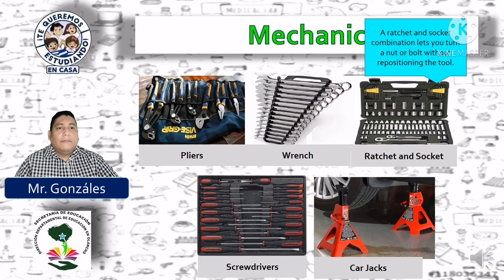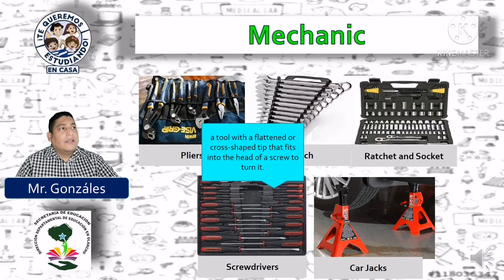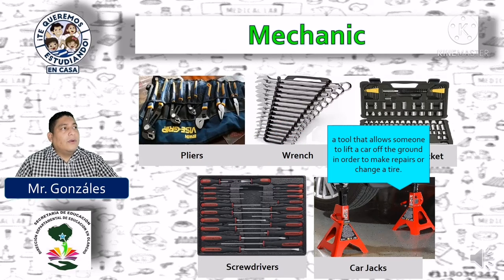A lever and a cube combined allows you to turn a nut or screw without repositioning the tool. Screwdrivers: a tool with a flattened or cross-shaped tip that fits into the head of a screw to turn it. Una herramienta achatada o con la punta en forma de cruz que encaja en la cabeza de un tornillo. Car jacks: a tool that allows someone to lift a car off the ground in order to make repairs or change a tire. Una herramienta que permite a alguien levantar un vehículo del suelo con el objetivo de hacer reparaciones o cambiar un neumático.